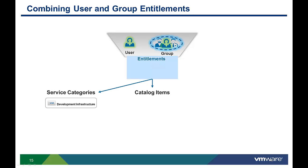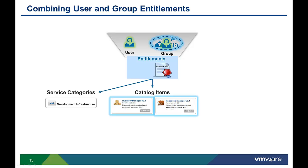Group entitlements can be combined with individual user entitlements. In this example, Mary, highlighted in green, is a member of the blue group and as such has been entitled to the blue catalog items in the development infrastructure category. An additional entitlement also provides her access to the shop manager catalog item, highlighted in green. This item cannot be seen by other members of the blue group. Creating individual user entitlements is the same as creating group entitlements; we are going to skip that due to time limitations.